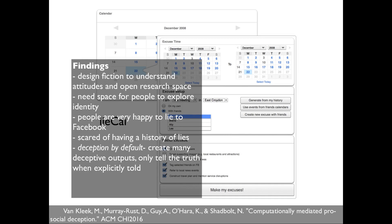By doing this we found design fictions are a very quick way to get into interesting behaviours. People really don't like the idea that they lie, even though they know they do it — if you give someone a button that says 'I want to lie,' it's quite a psychological step to press it. On the other hand, people are very happy to lie to platforms like Facebook and to systems they don't trust. This leads to ideas like deception by default: if we fill system outputs with fake information and only reveal the true information when we really want to, we can regain some space for human behaviour in this surveilled society.